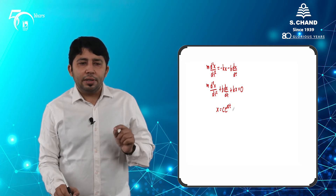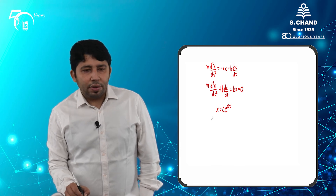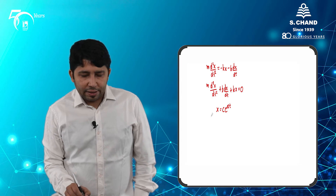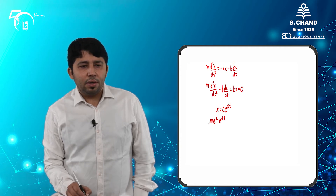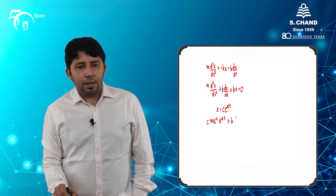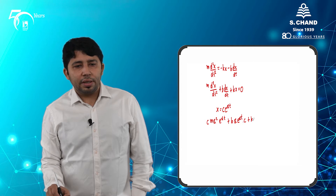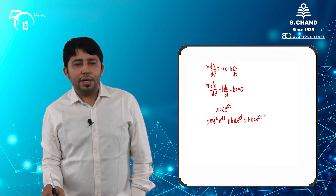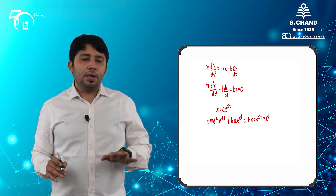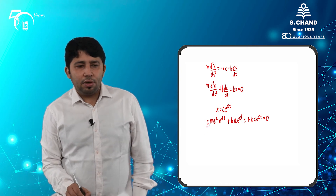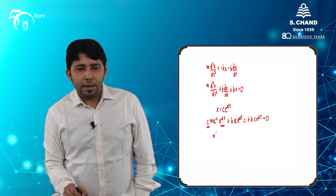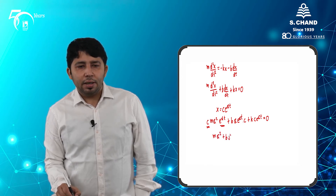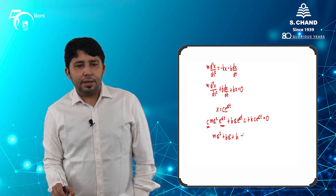Inserting this sample solution into the equation, for the second derivative we get m·α²·e^(αt), plus b·α·e^(αt), plus k·c·e^(αt) equals zero. Taking c·e^(αt) as common from every term, we get the auxiliary equation: m·α² + b·α + k = 0.